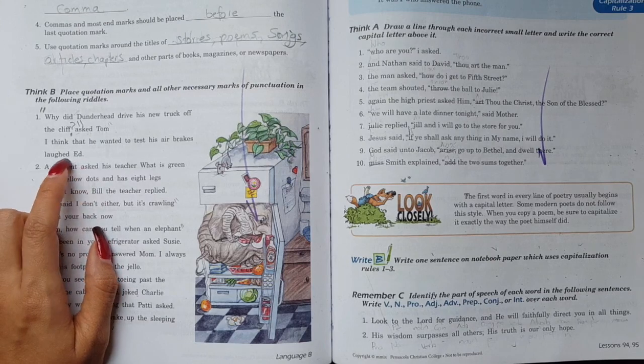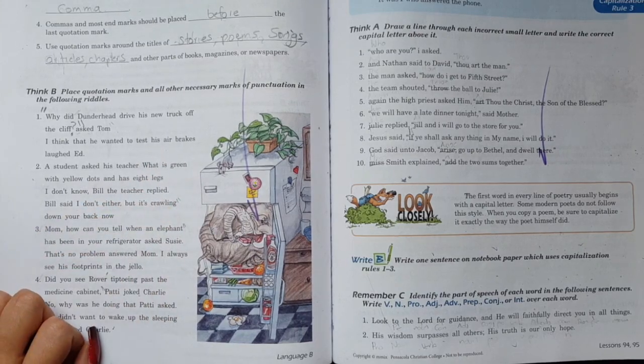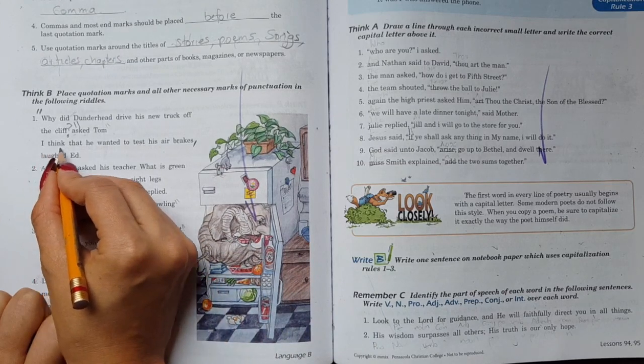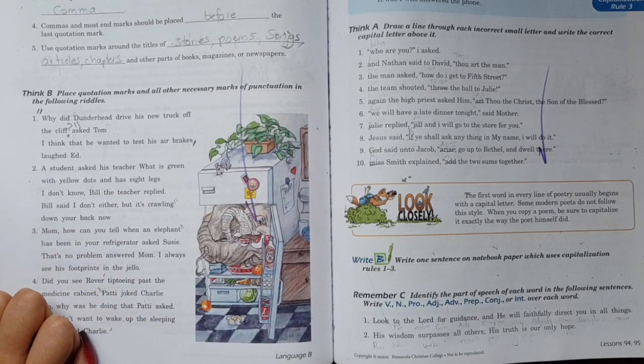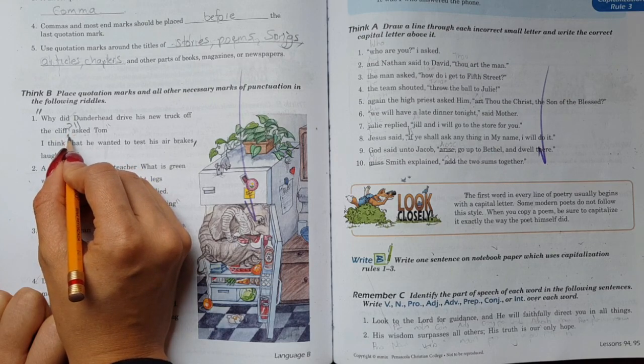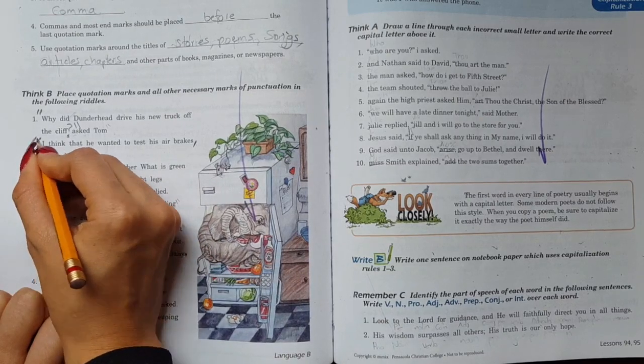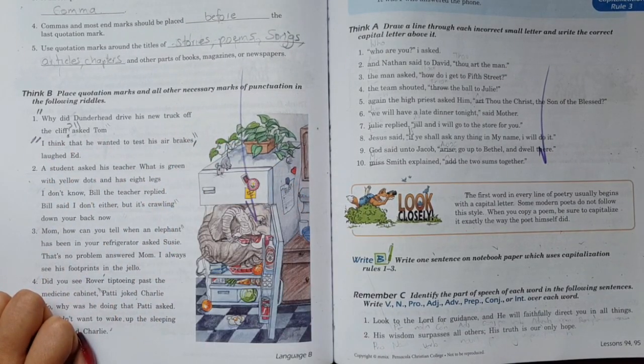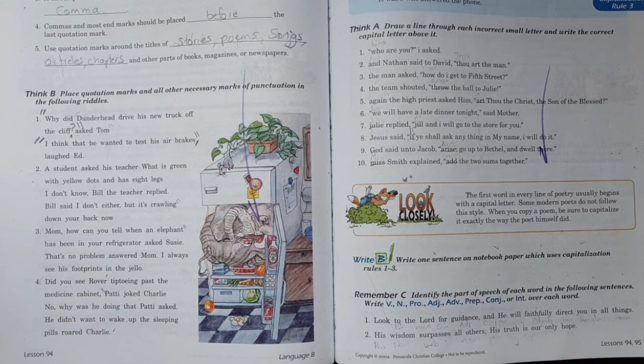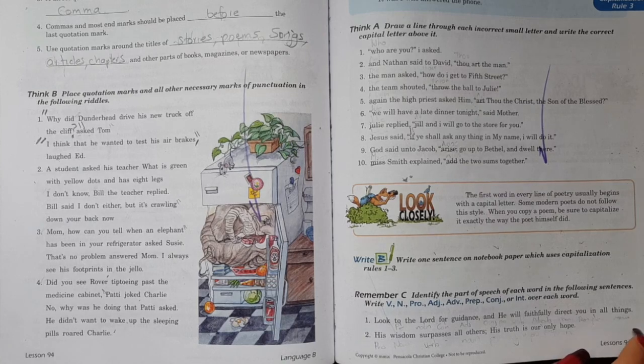Then it says I think that he wanted to test his air brakes. Ed said smiling. What did he laugh at? Comma, right, to separate. Here I don't put the comma because I used the question mark. Remember when we're using a question mark, we don't need to put a comma. If I don't use the question mark, then I put comma, and I put the quotation marks.